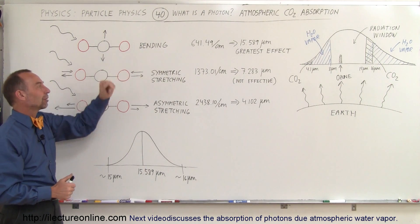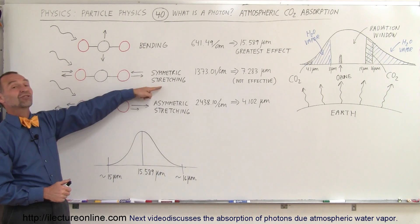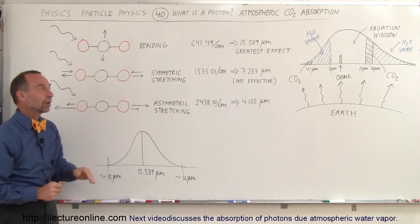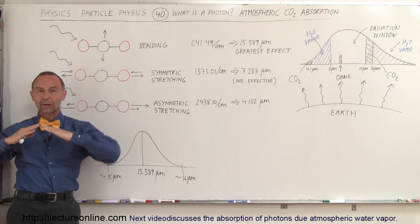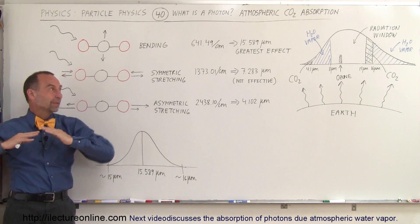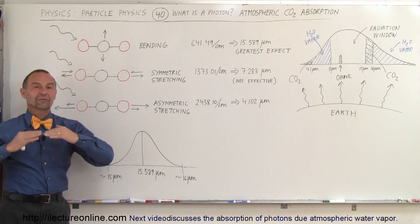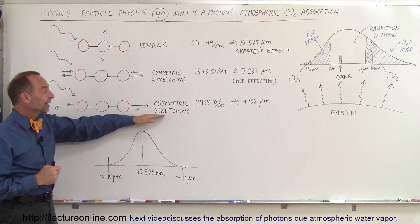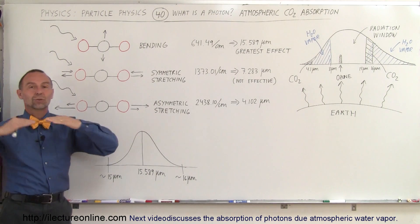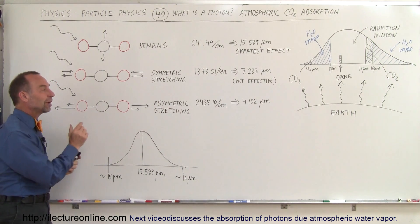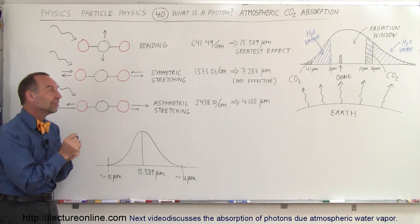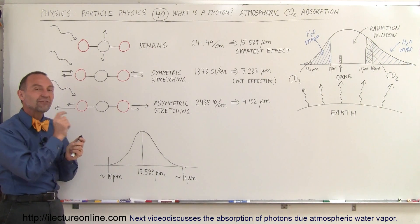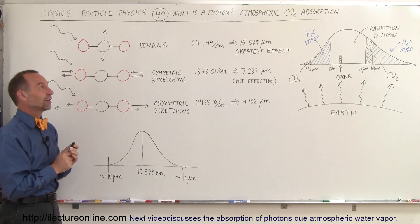One of those vibrations is called the bending vibration, another is called the symmetric stretching vibration, and the third is called the asymmetric stretching vibration. The bending vibration is when the molecule bends like this, the symmetric stretching is when the molecule vibrates like this, and the asymmetric stretching is when the molecule vibrates like this. Each of those vibrations occurs at different frequencies, so it can only absorb photons of a very specific wavelength and a very specific frequency.